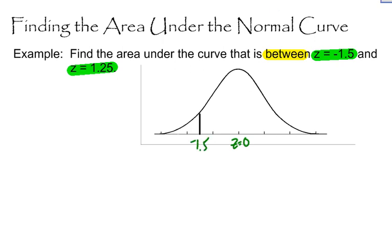And a z-score of positive 1.25 is going to be right about here. And I will label that positive 1.25. And I want to find the area between the two.